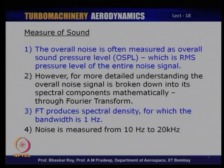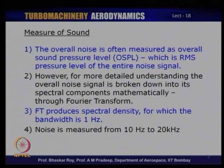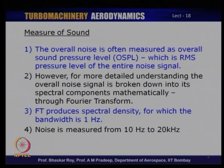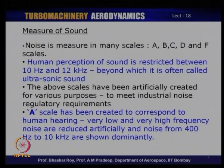Fourier transform produces spectral density for which the standard measured bandwidth is 1 hertz. The frequencies of noises are expressed in terms of hertz and are normally measured from something like 10 to 20 kilohertz — that is 20,000 hertz. That is the frequency range over which measurements can normally be made. It is possible that the noise generated could be higher than 20 kilohertz or lower, but those kinds of noise are normally not of interest to us.